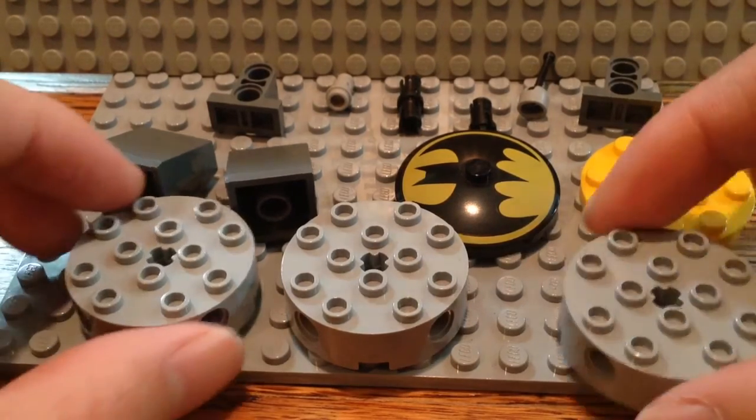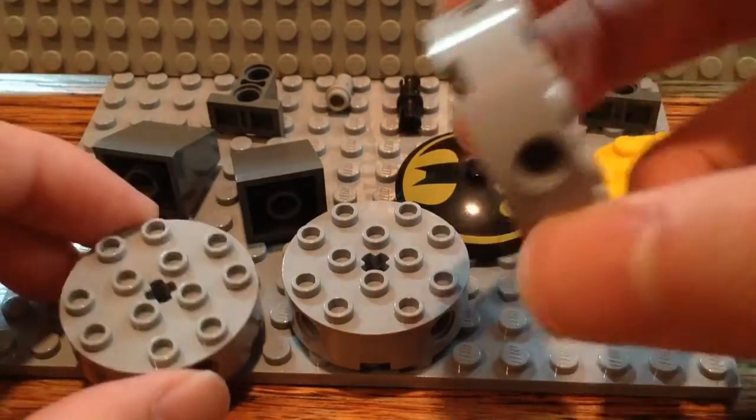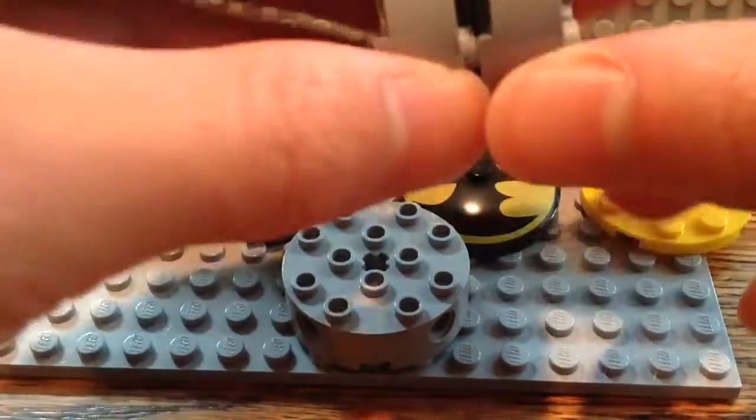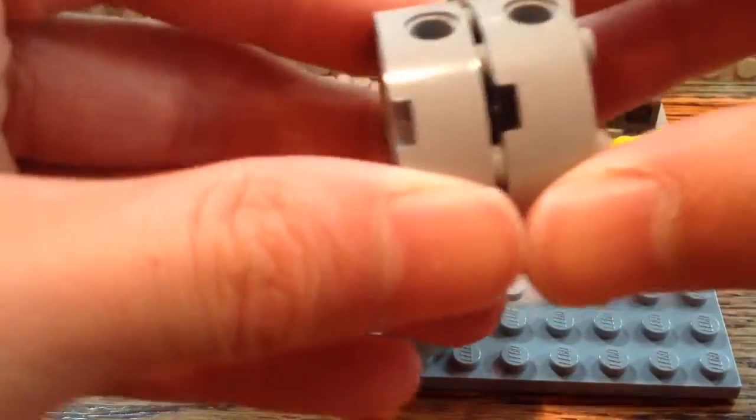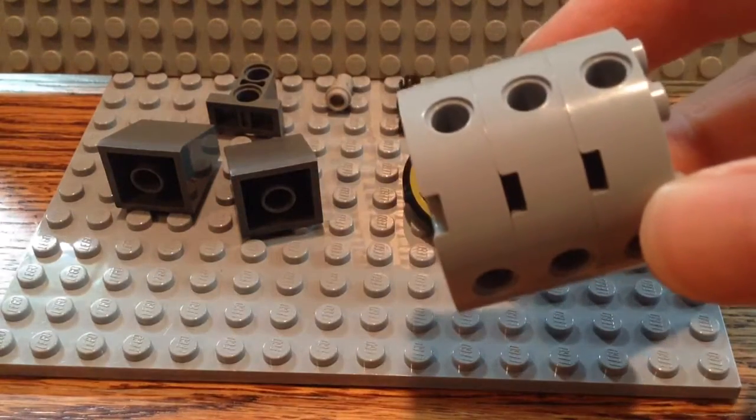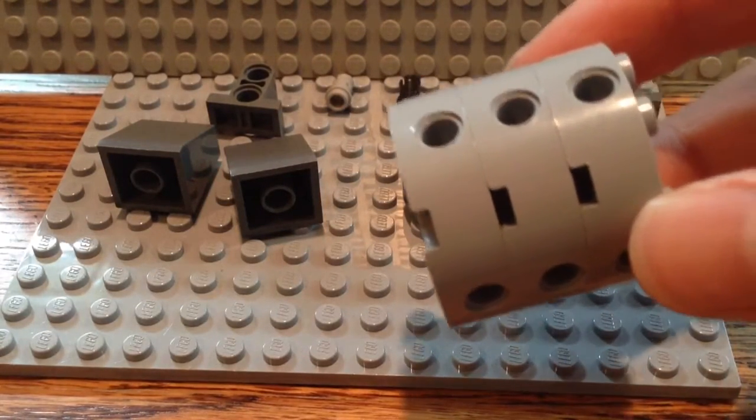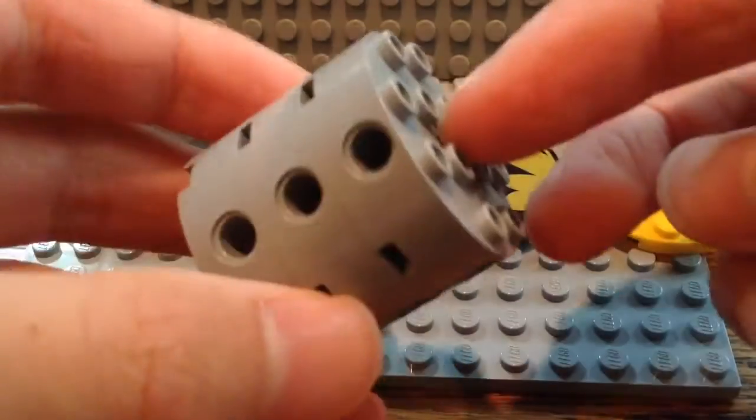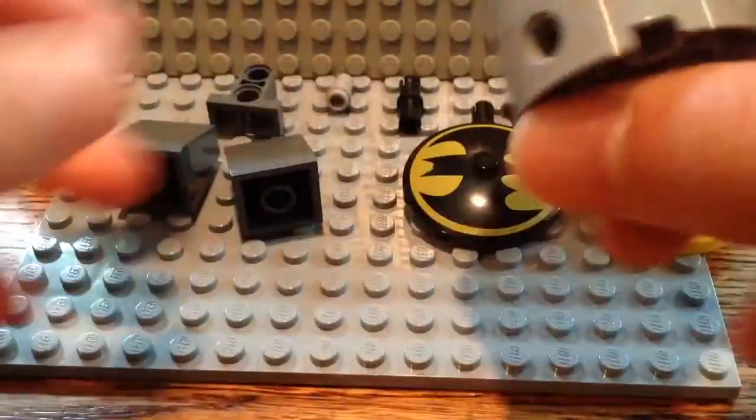So, first up you're going to need three of these cylinder pieces. And then you just want to connect them together and have the holes lined up. And this is light gray. Because I know on some of the older Lego instruction manuals, it's really hard to tell like what color some of the bricks are. So, you put the three of those cylinders together. That's like the main body of this.